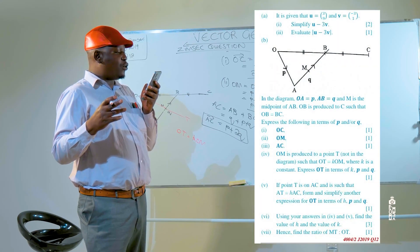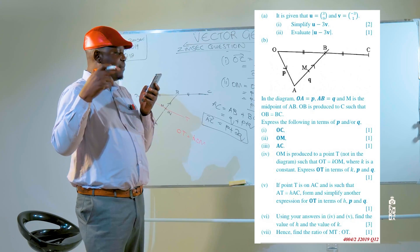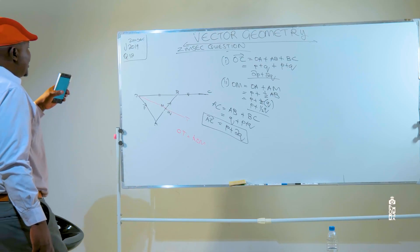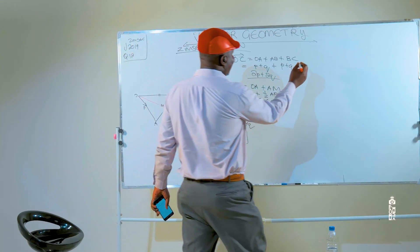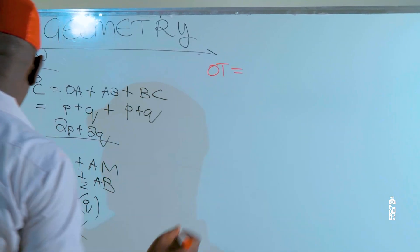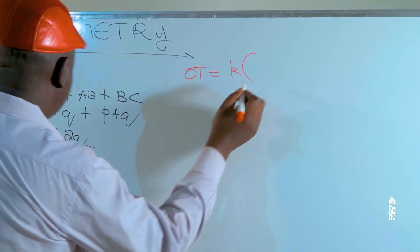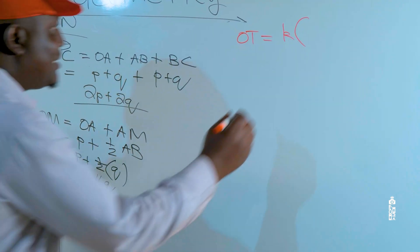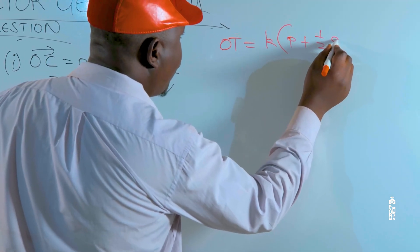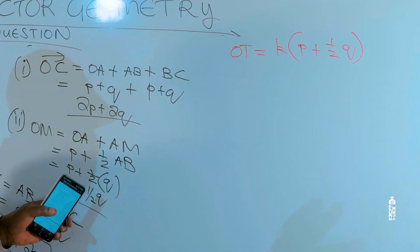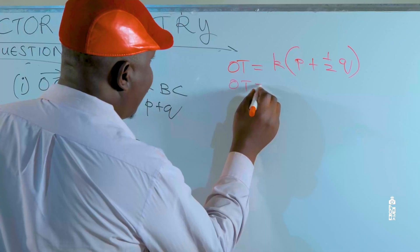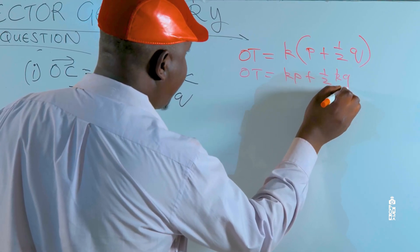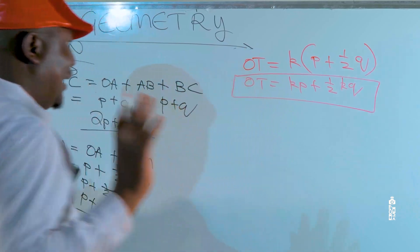Express OT in terms of K, P, and Q. We are told OT equals K times OM. So vector OT is going to be equal to K multiplied by OM, and OM is P plus half Q. Expanding the bracket gives OT equal to KP plus half KQ. This is vector OT.